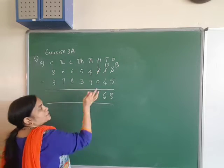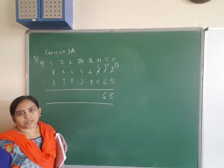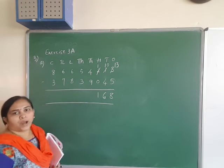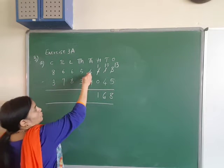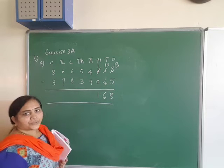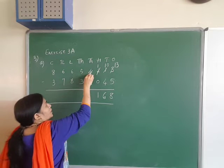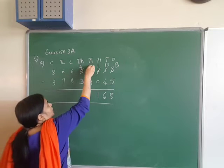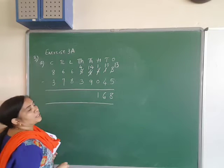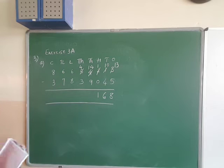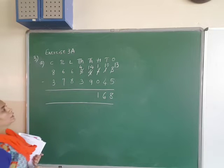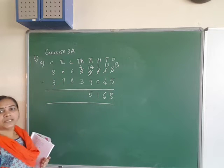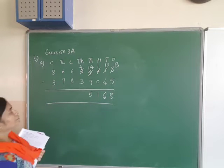Next, 1 minus 0 — anything you subtract 0, it remains as it is, so 1 minus 0 is 1. Next, 4 minus 9 — you cannot subtract. So take a carry over of 1 from here, this becomes 4, this will become 14. 14 minus 9 is 5.